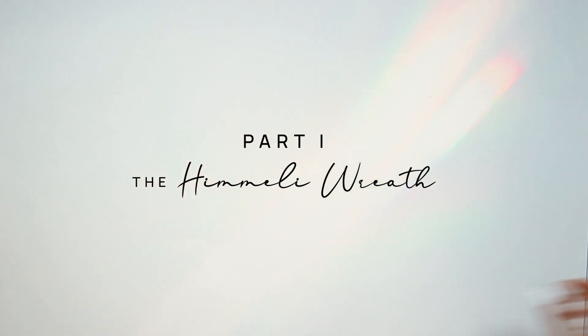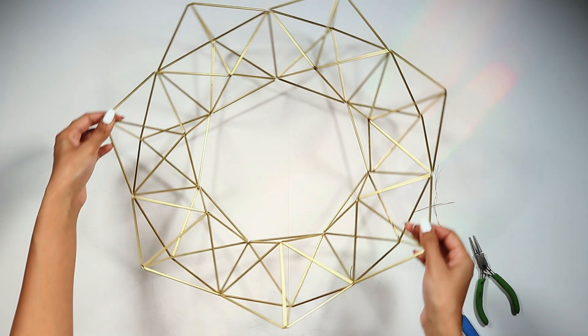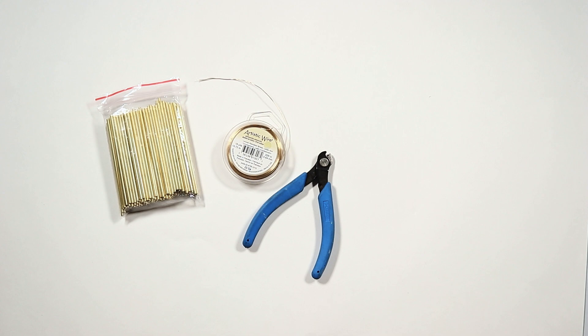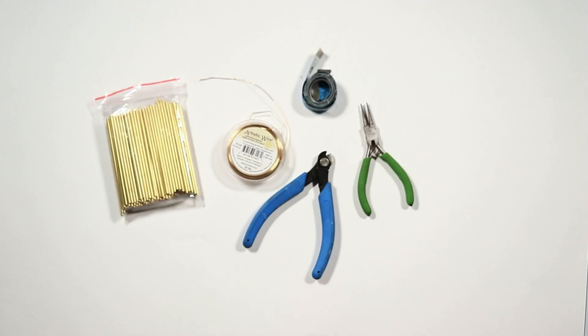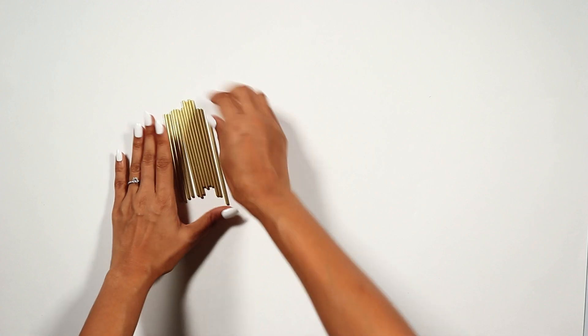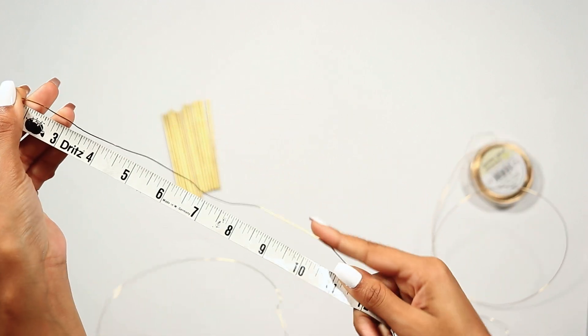The first thing that I did here was make the Himalaya wreath. I used 98 of these brass tubes. Each one is 100 millimeters with a three millimeter opening, 22 gauge brass wire, wire cutters, round nose pliers, and a tape measure. To start, I'm pulling out 14 of these brass tubes and I'm going to measure out all of the wire that I need.